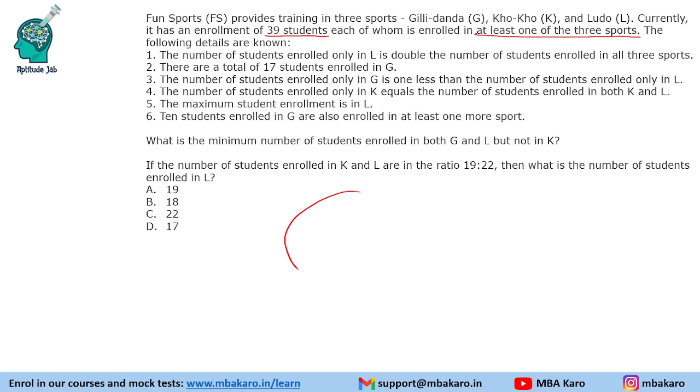So we make a Venn Diagram with Gilly Denda, Cocoa, and Ludo. Now we will look at the statements that talk about numbers. Like for example, the number of students only in L is double. We clearly see a number 17 students enrolled in G, so we will put the number 17 here.